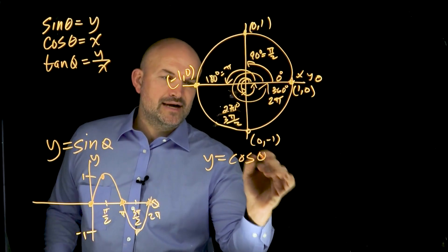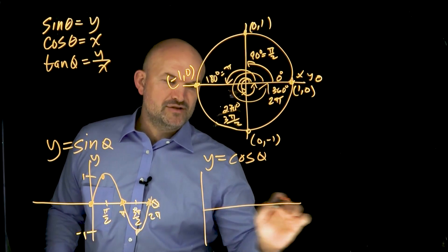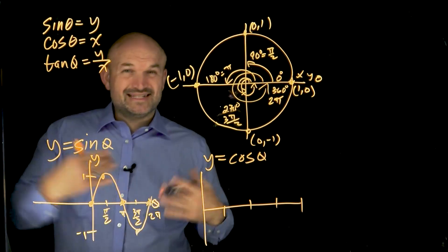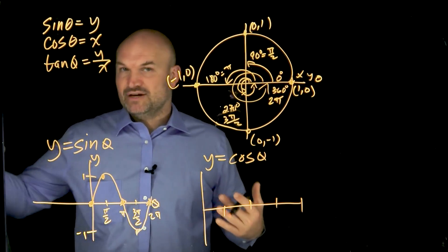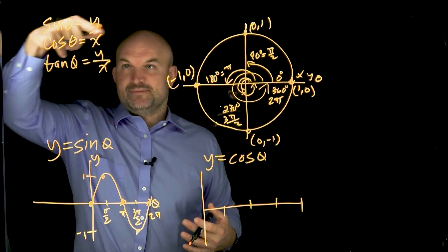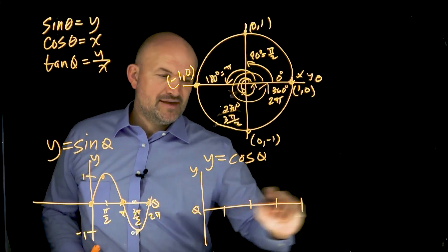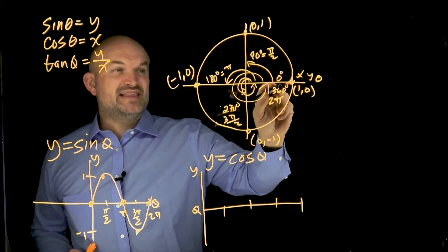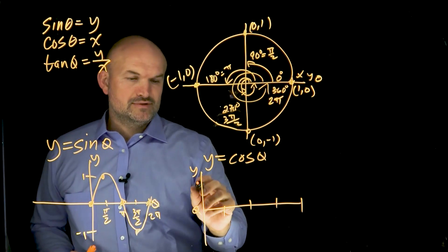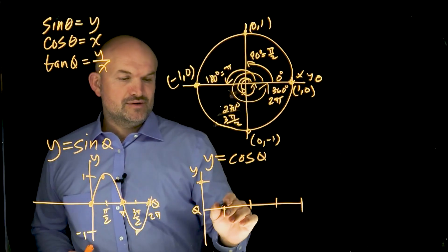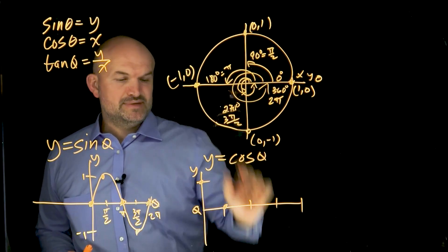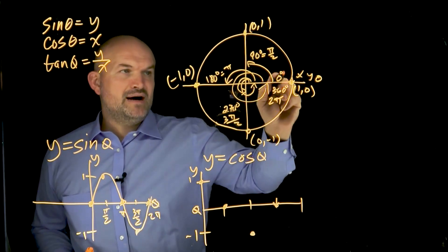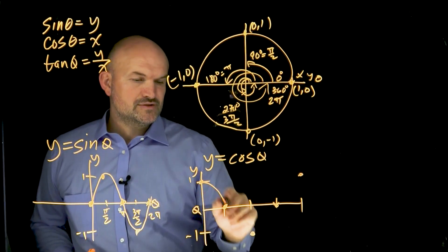Now let's do Y equals cosine of theta. We have the same four angles: zero, pi halves, pi, three pi halves, and two pi. For cosine, the definition is different — the cosine of your angle is represented by the X coordinate on the unit circle. At zero, the X coordinate is one, so we start up high. At pi halves it's zero, at pi it's negative one, at three pi halves it's zero, and at two pi it's back to one.